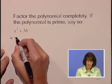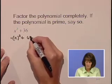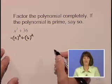That x squared comes from taking the quantity x times itself. 36 comes from 6 times itself, or 6 squared.